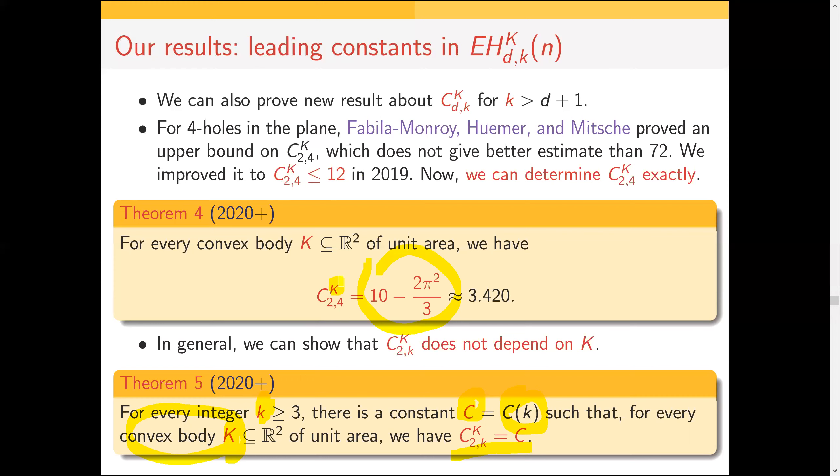For larger holes in the plane we cannot yet evaluate the constant precisely — the integrals are in principle computable but too difficult. However, we can show that in the plane the leading constant does not depend on the convex body. For any k, there is a constant c_k such that for any convex body of unit area, the leading constant in the expected number of k-holes equals exactly c_k. This is no longer true in higher dimensions, as we saw for empty simplices in three-space.